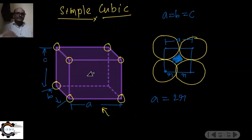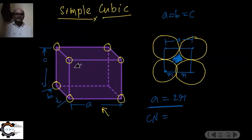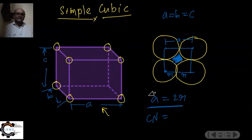Now the coordination number for simple cubic: one atom has neighbors — one on the right, one on the left, one above, one below, one in front, one behind. So the coordination number is 6. And a = 2r.